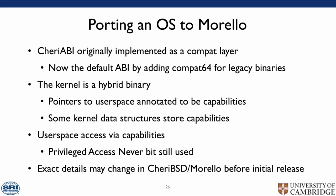The second part of porting an operating system to Morello is porting a CHERI ABI layer. It was originally implemented as a compatibility layer; however, it is now the default ABI with a Compat64 layer added for legacy binaries. The kernel is a hybrid binary — it has pointers to userspace annotated as capabilities, and some kernel data structures store capabilities. User access is via capabilities, and importantly the privileged access never register is still used. However, the exact details may change before CheriBSD Morello is initially released.